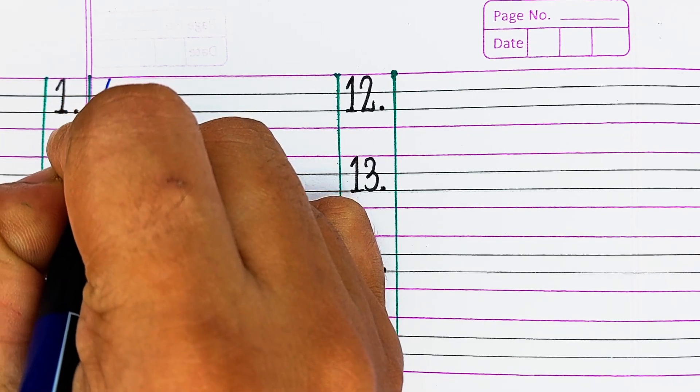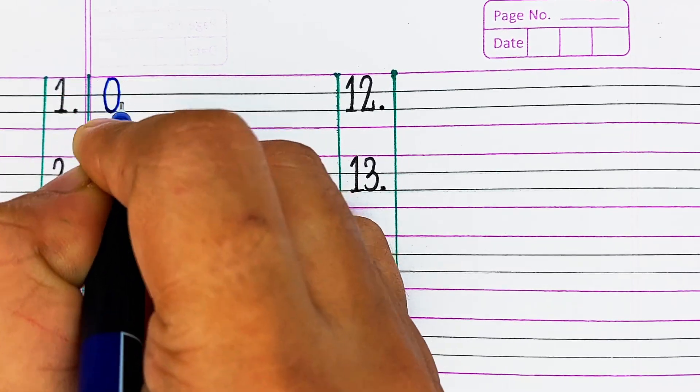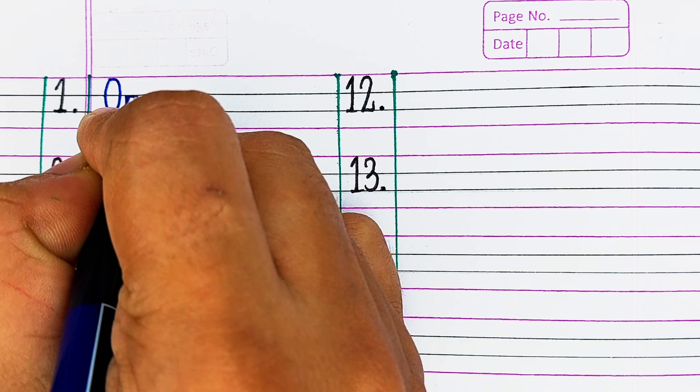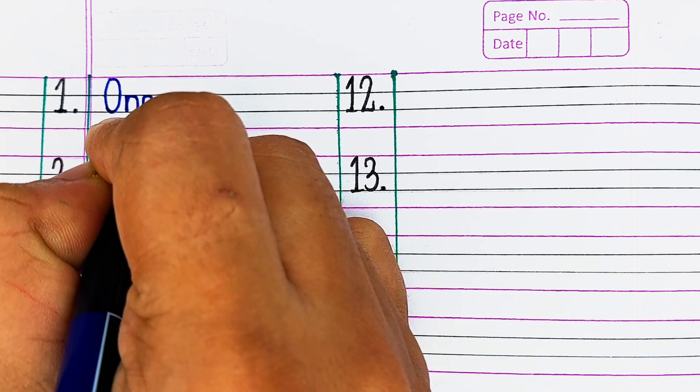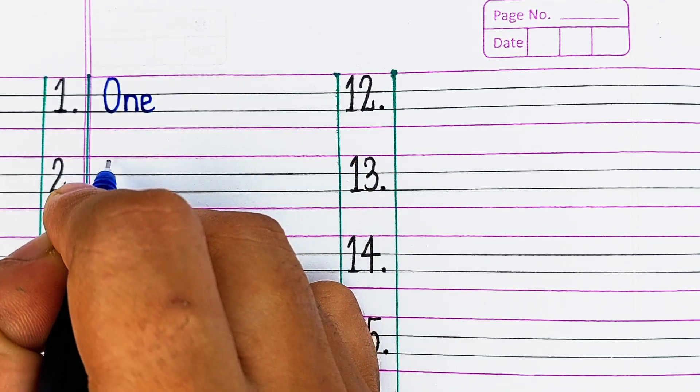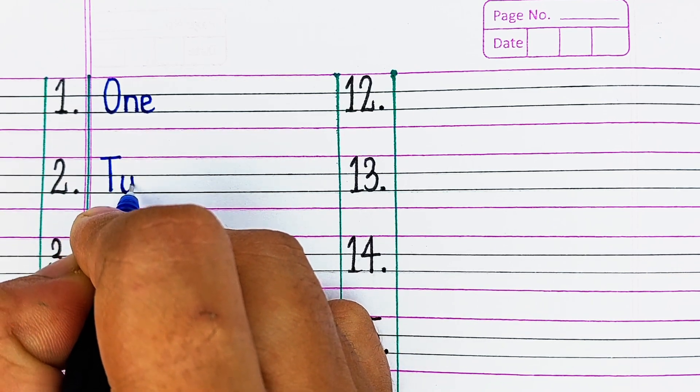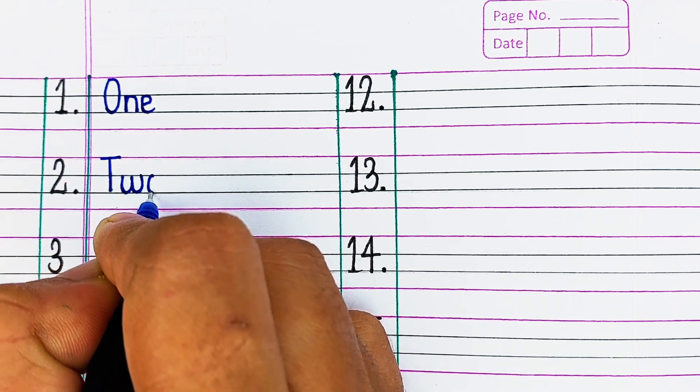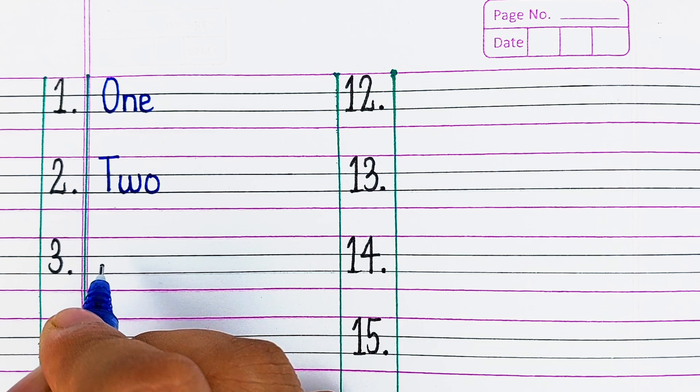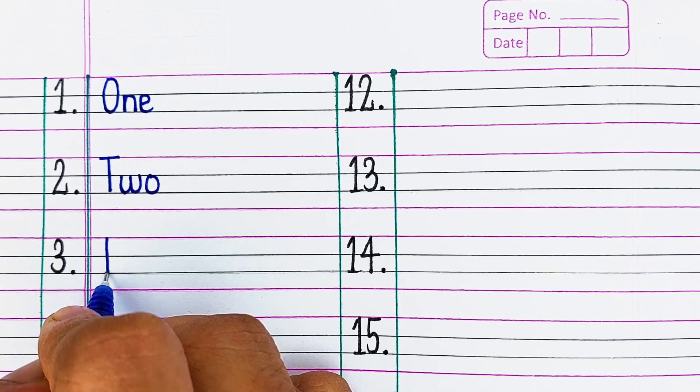Hello viewers, welcome to our channel Try to Learn. In this video we will learn number names from 1 to 50 with their spellings and recitation. If you find this video helpful, please hit the like button and for more such videos consider subscribing to our channel Try to Learn.